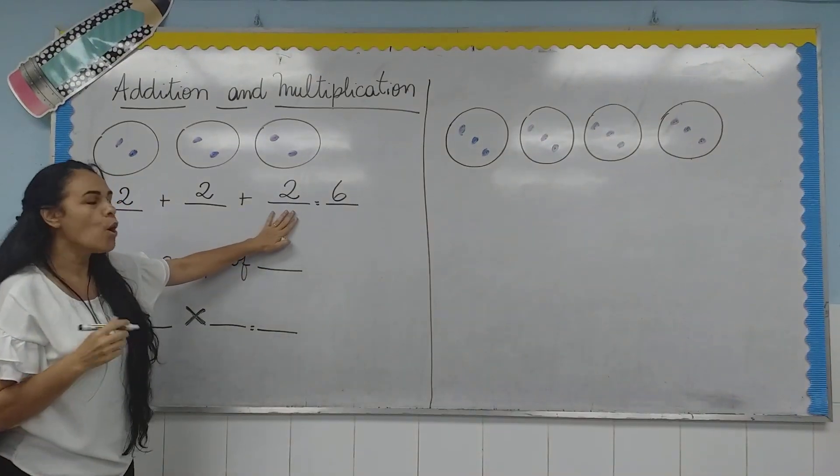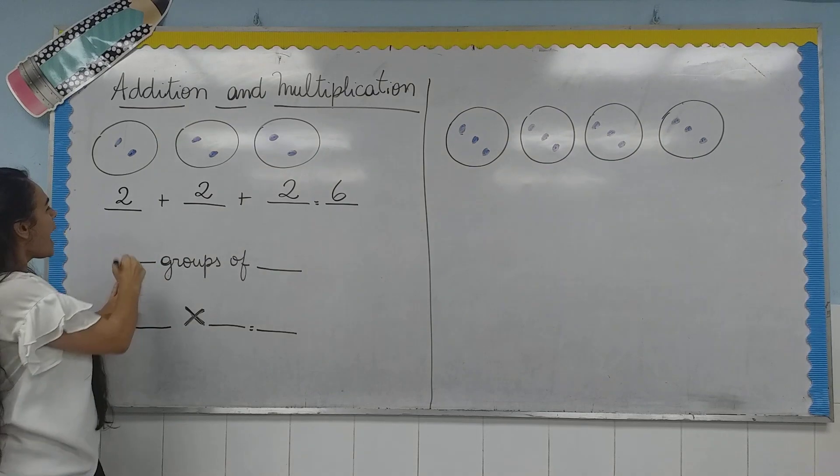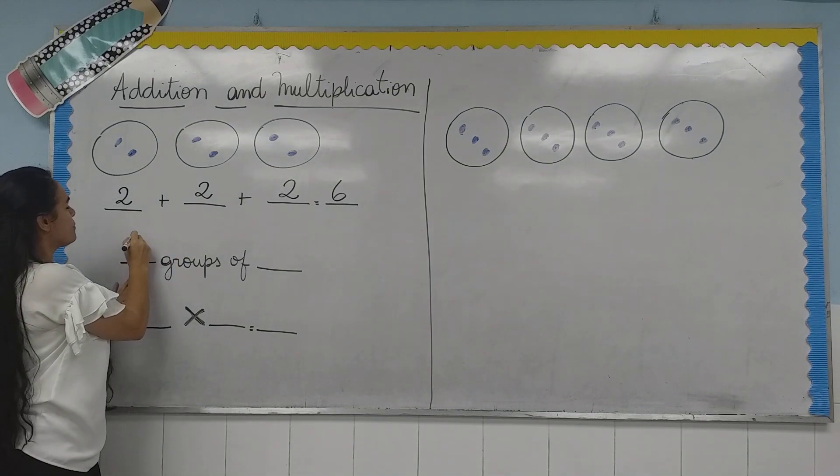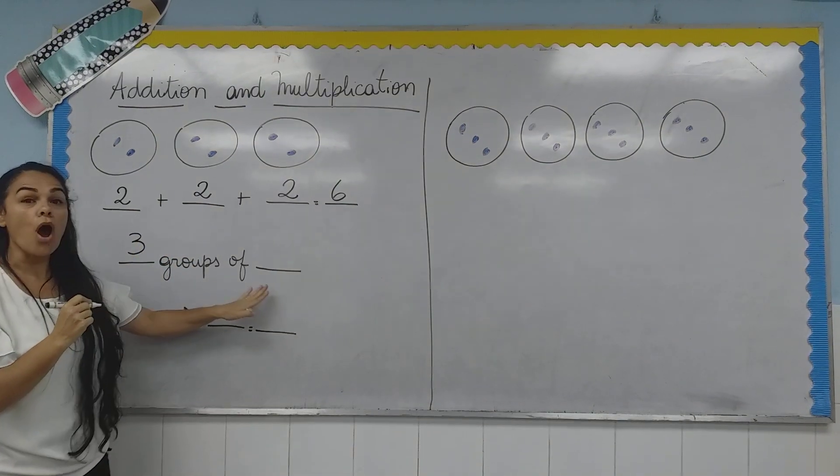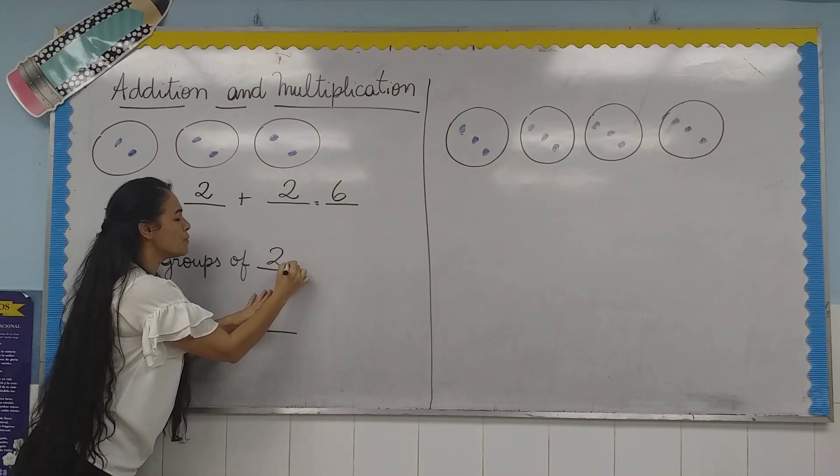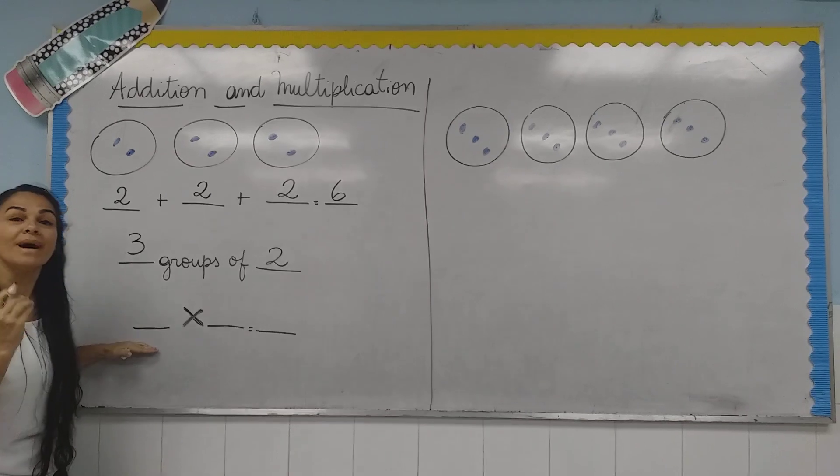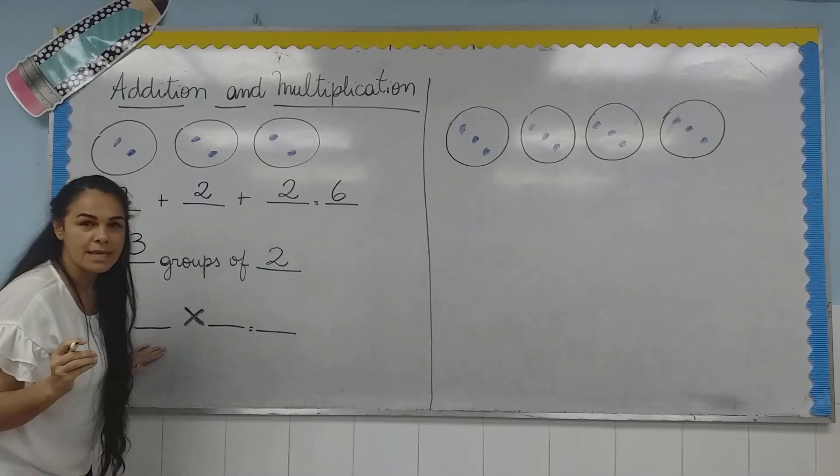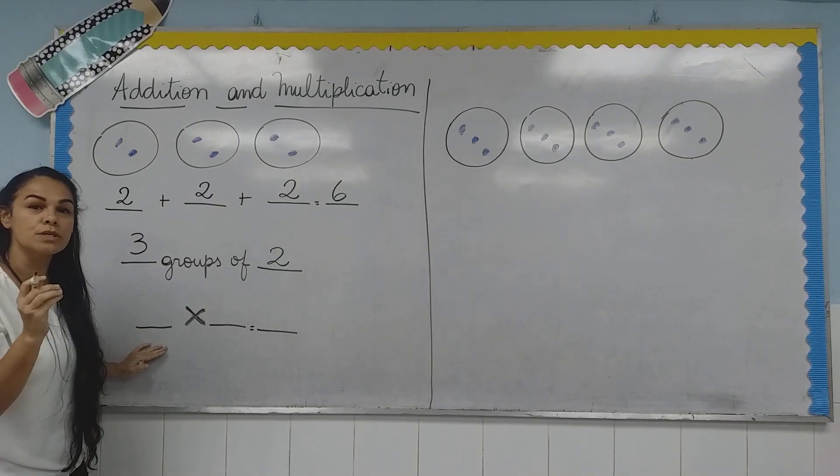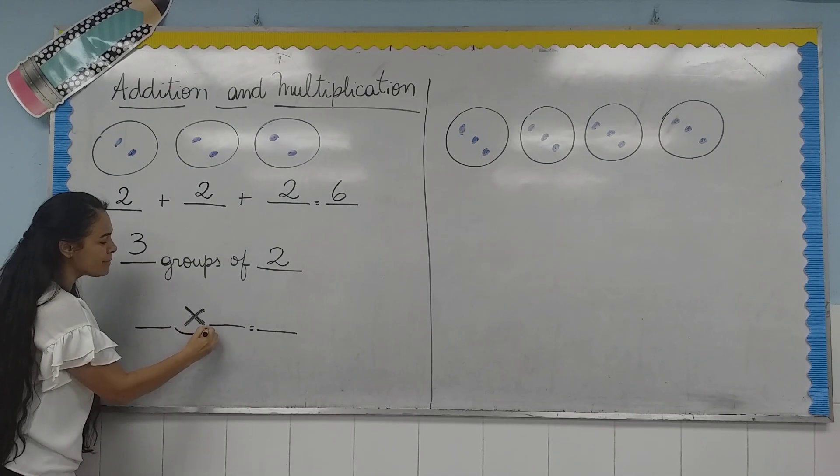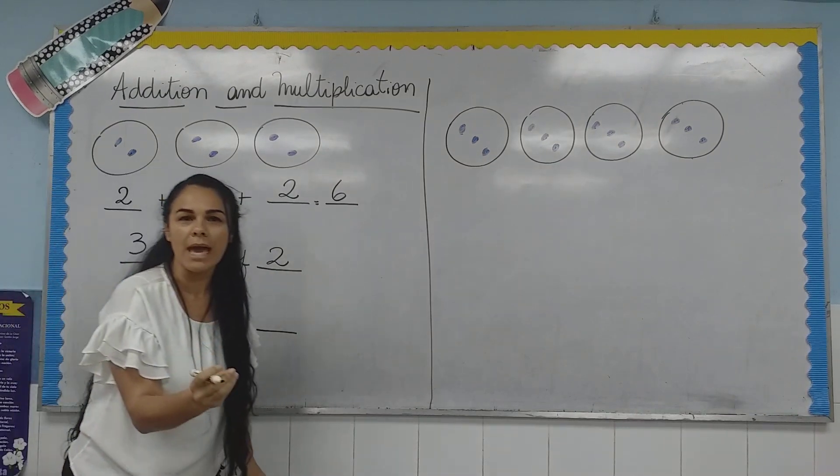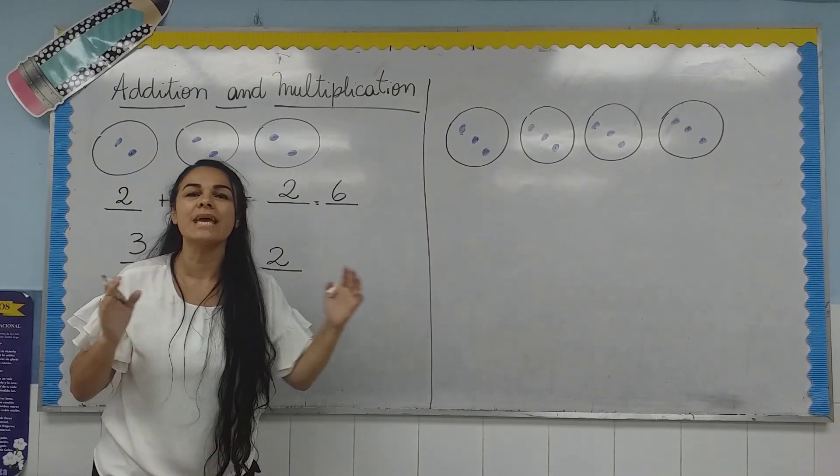So, now, what it means that we have how many groups? Three groups of two. And this, I can make a multiplication sentence. A multiplication sentence is the symbol to say times. How many times you repeat the same number?